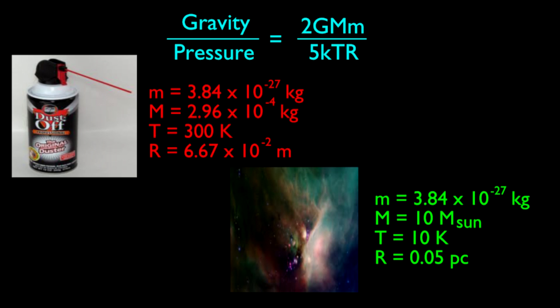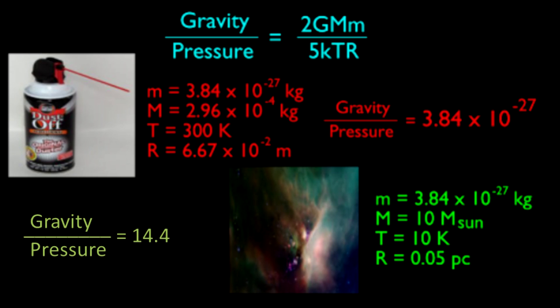Using the values displayed on the screen, we find that for the compressed air, the ratio of gravitational energy to pressure energy is about 10 to the negative 27. Obviously, in this case gravity is completely negligible. But for the interstellar gas cloud, the ratio is about 14, which means that gravity is actually a much stronger force than gas pressure.